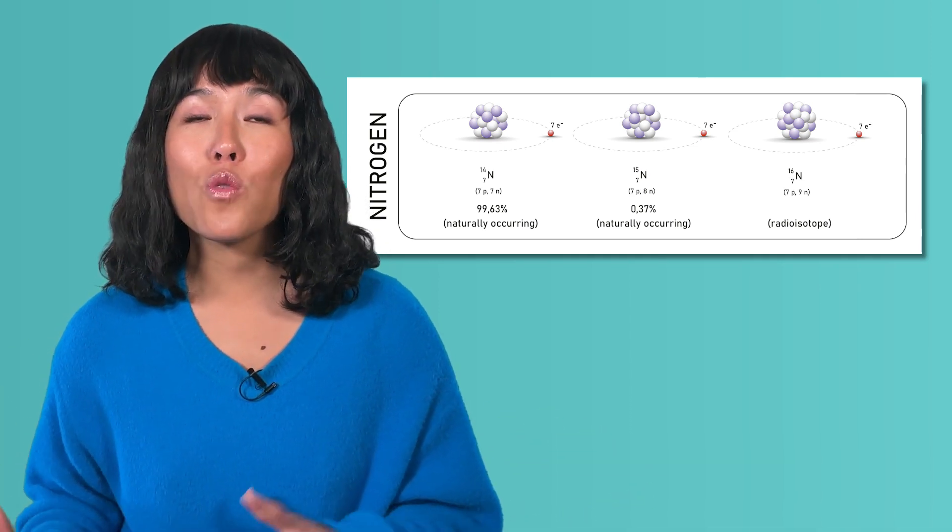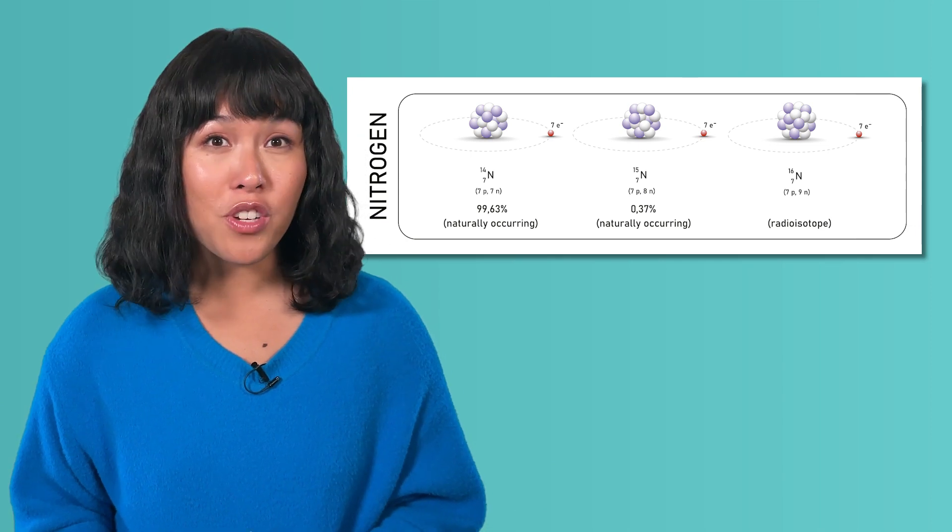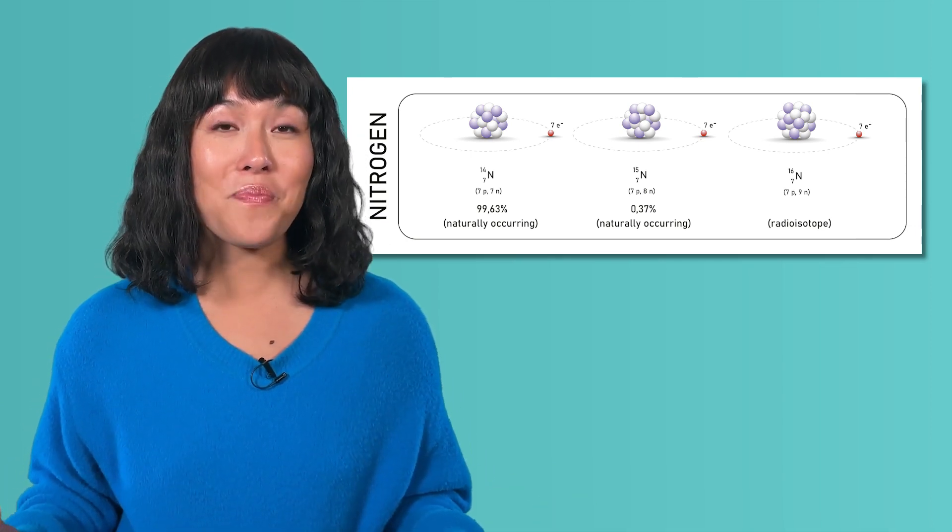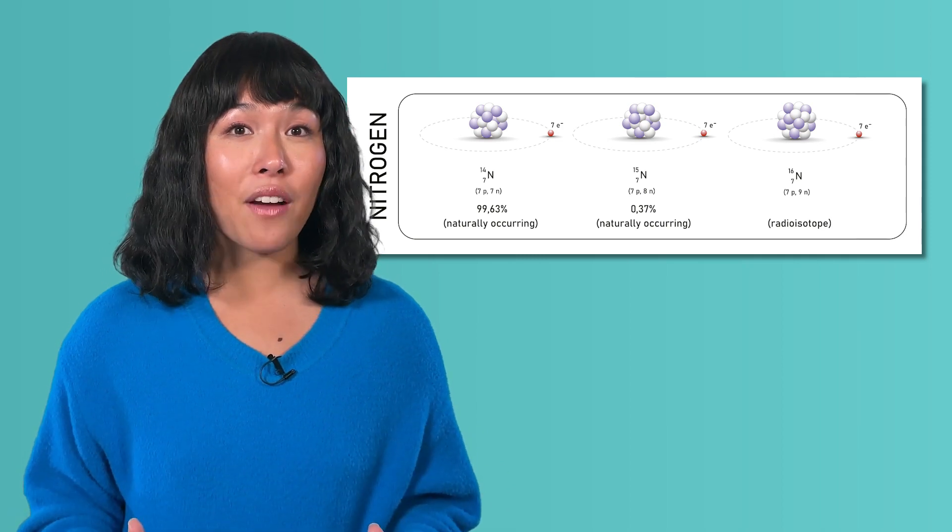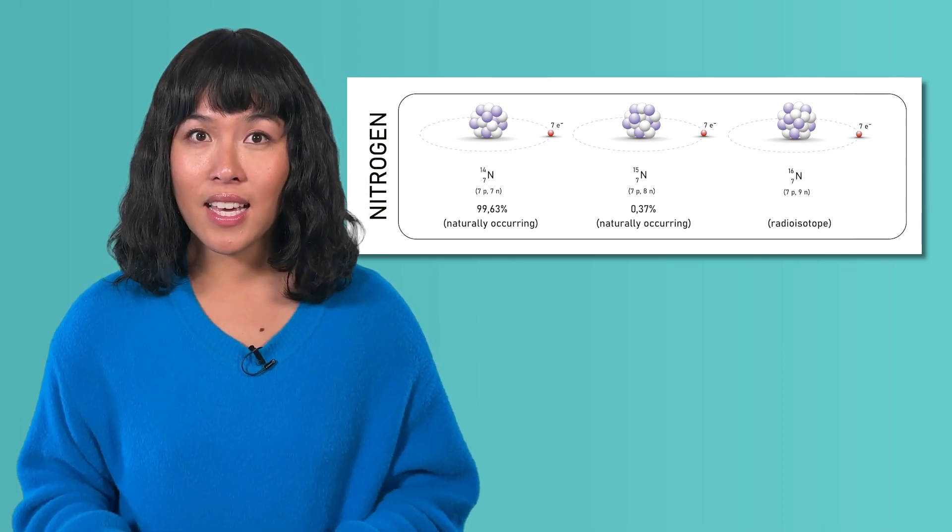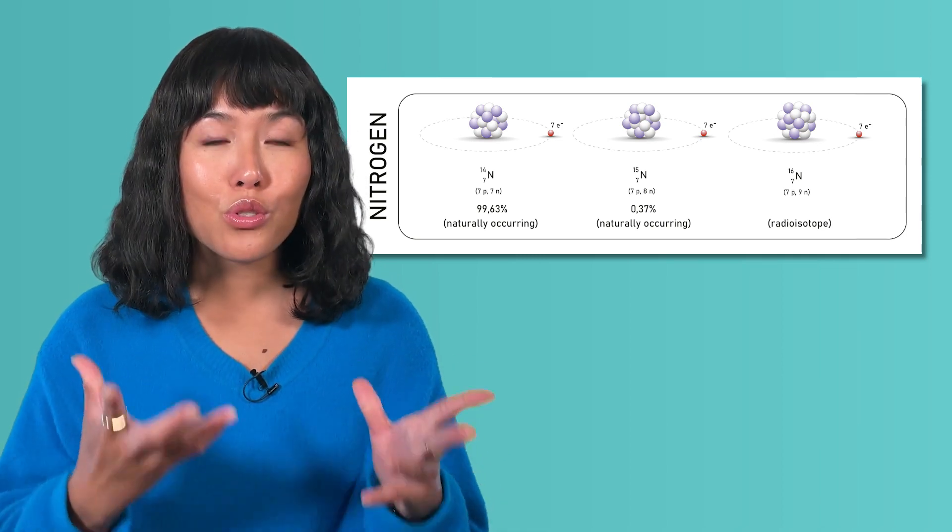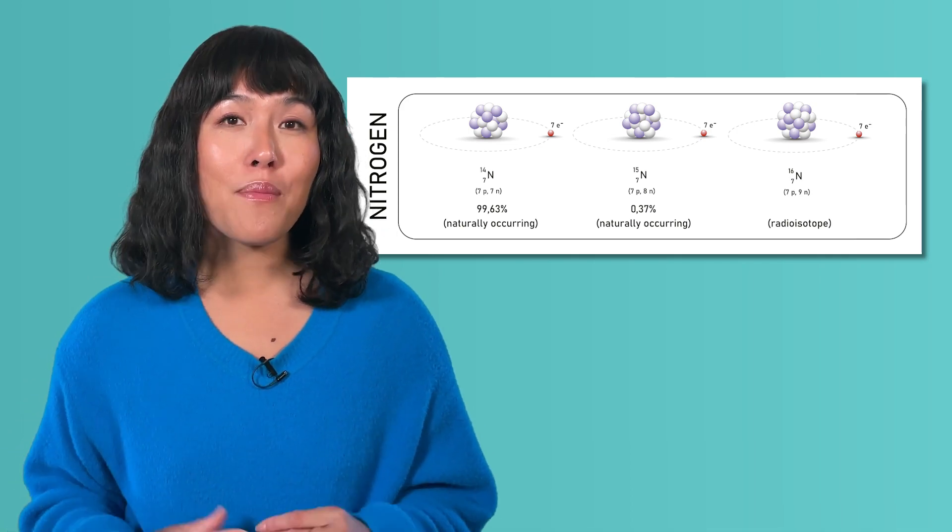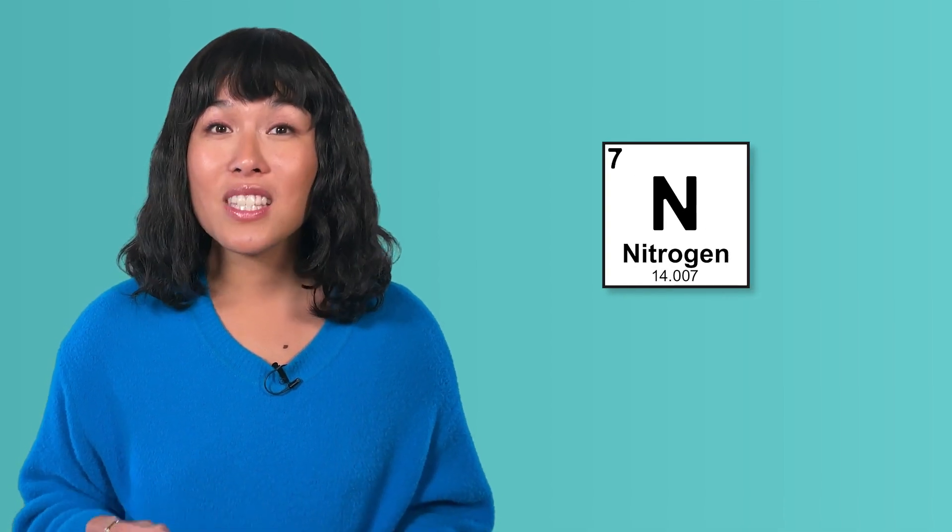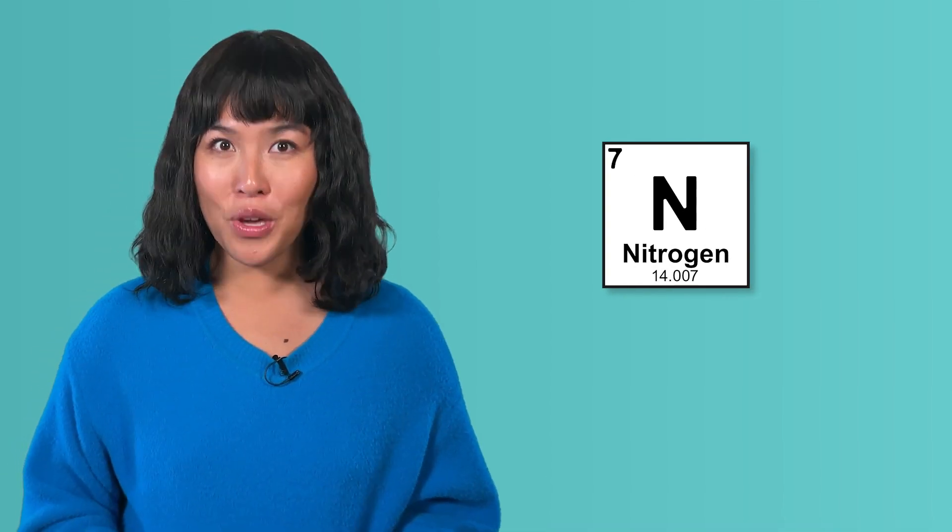However, nitrogen 14 is the most abundant, accounting for 99.63% of all atoms of nitrogen. That means that out of every 100 atoms of nitrogen, over 99 of them have a mass of 14. When calculating a weighted average of these three masses, it will be heavily skewed toward the mass of 14, and in fact, the average atomic mass of nitrogen is 14.007 amu.